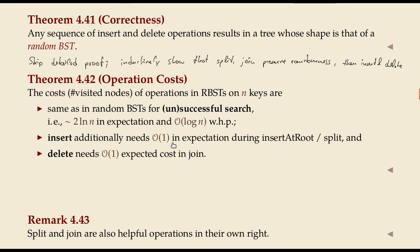For insert and delete we have the same kind of costs as in treaps: there's only a constant number in expectation of nodes that we have to touch with the insert-at-root or split/join operations. That might be surprising at first, since insert tries all nodes from root down the tree and flips a coin at each. But for a node high up in the tree, the probability of actually changing it is also very small, so the expectation is always constant.